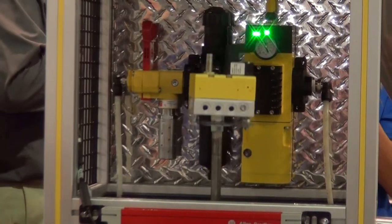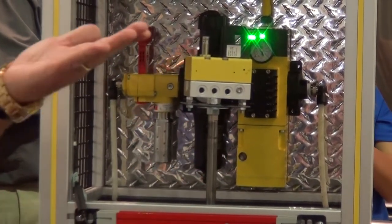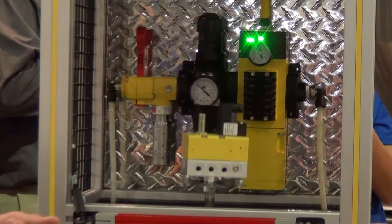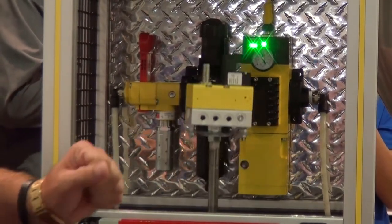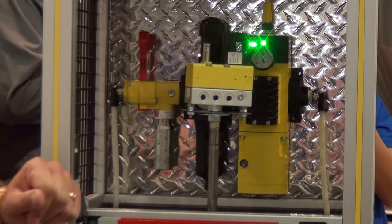I've got a machine, a cylinder that's cycling, moving up and down. And what I'm going to do is I'm going to break the light curtain and exhaust the air, which would let the cylinder drift down.